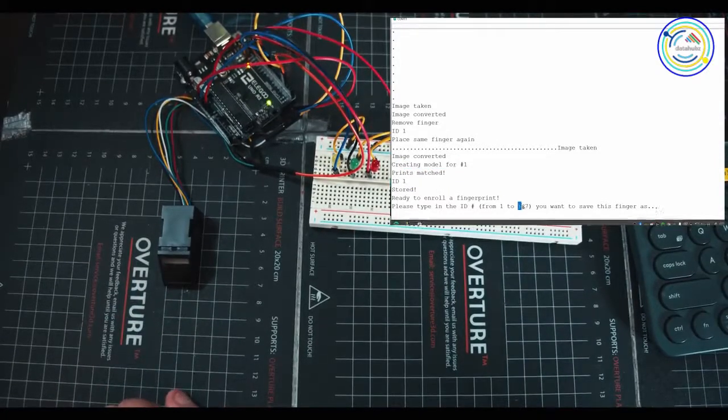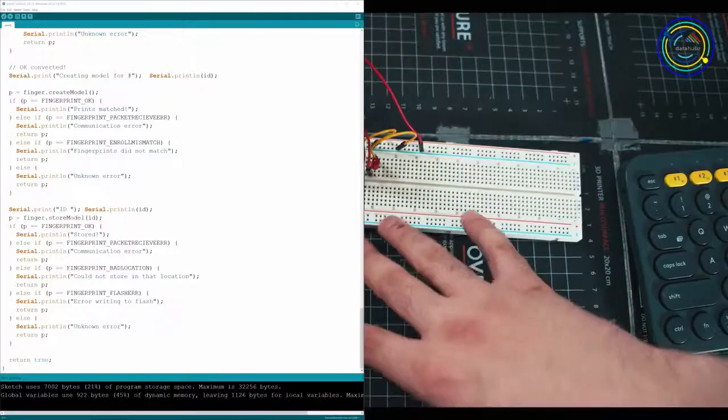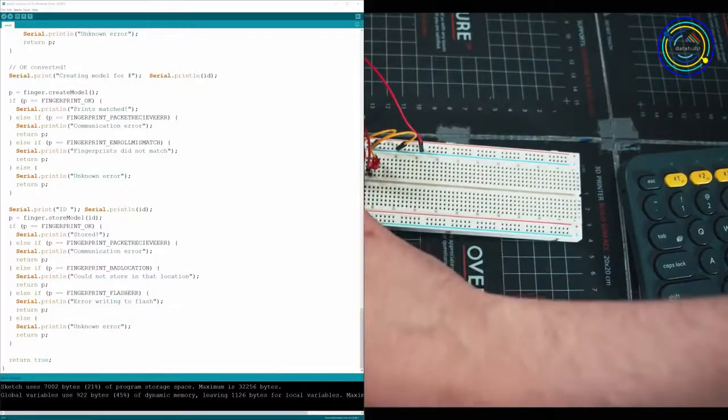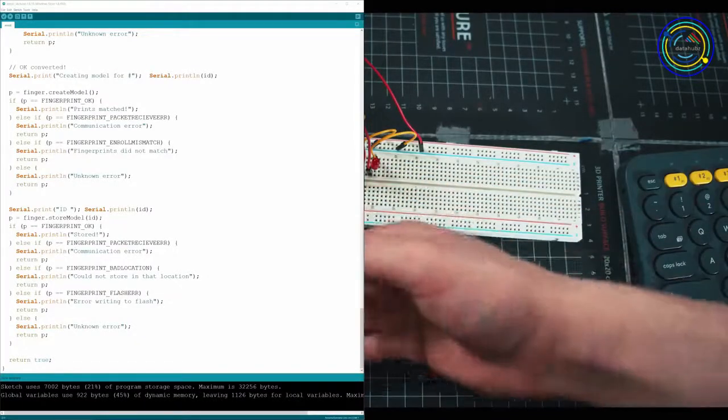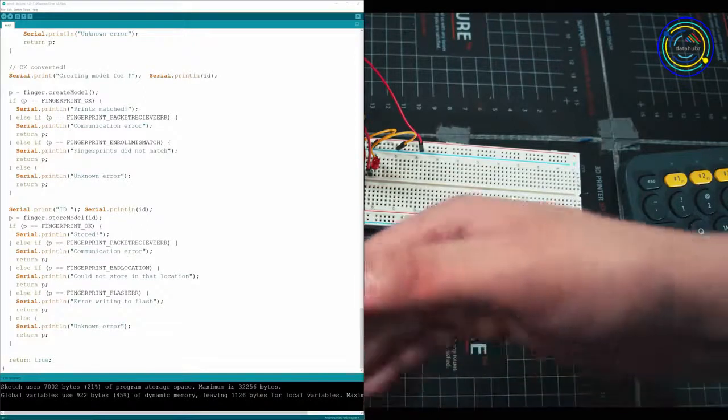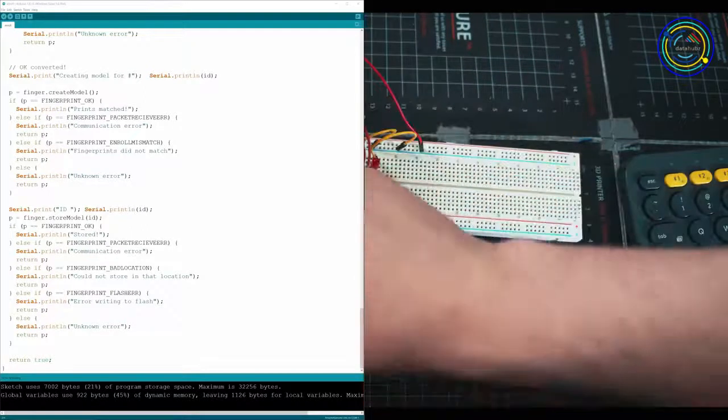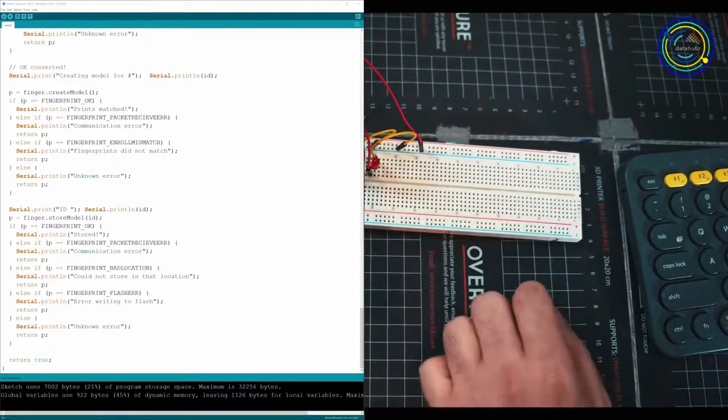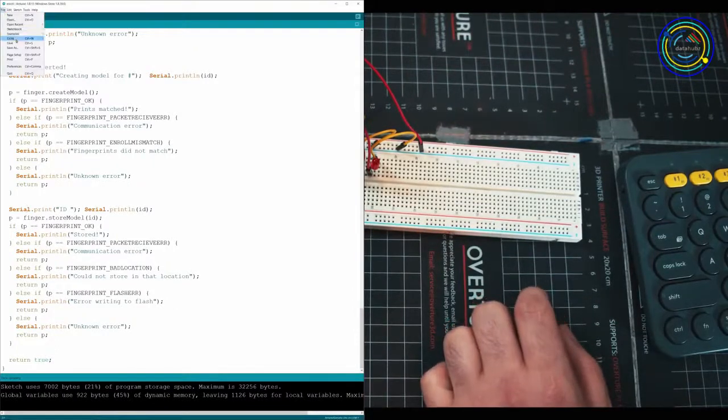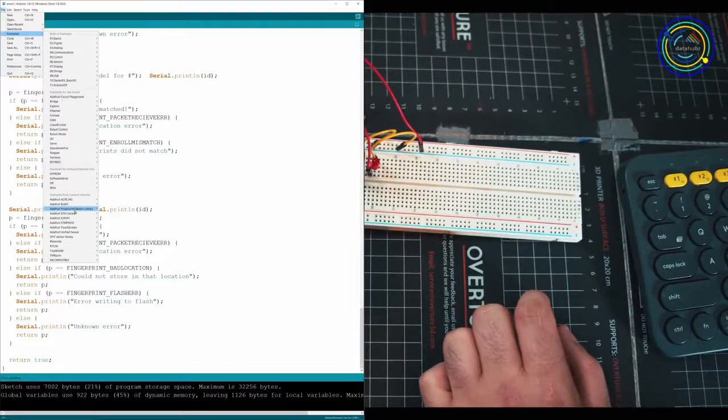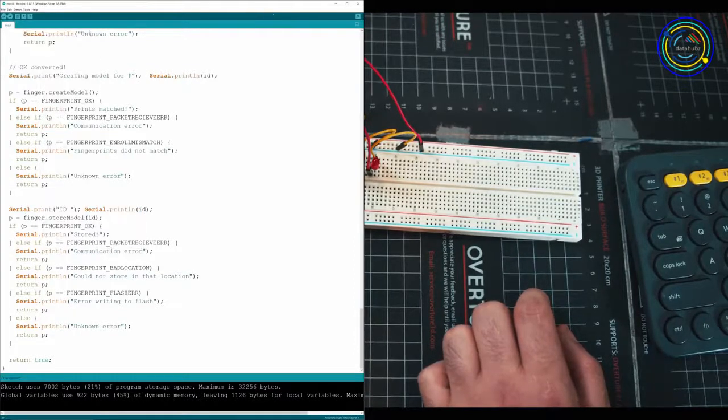Boom, stored. So now we can see prints matched, ID 1 stored, ready to enroll a fingerprint. You can go and add as many as you want, or 127 worth of fingers. Now that we have enrolled a finger into the sensor, the next step is to go and activate the sensor normally and see if we can get a match on any of the IDs that are currently stored on this sensor. So we're going to go again into File, Examples, all the way down to Fingerprint Sensor Library, and let's go and grab fingerprint.